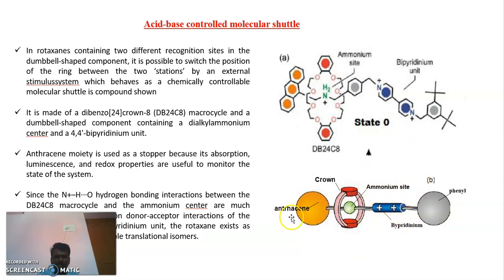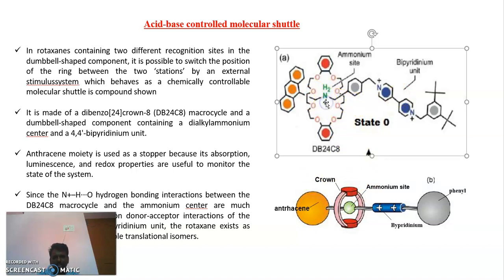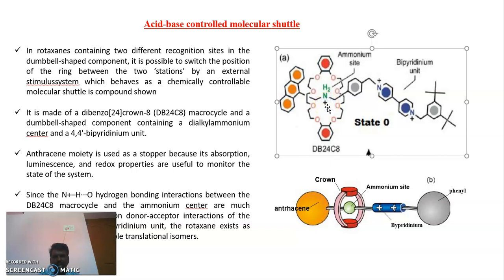How does it work? What is the function of this rotaxane? Before going to that, we have to see the chemical properties of these rotaxane molecules. In this, this nitrogen is having a positive charge. This ammonium side is having a positive charge, and the attraction between this positive charge and this oxygen is very, very strong.